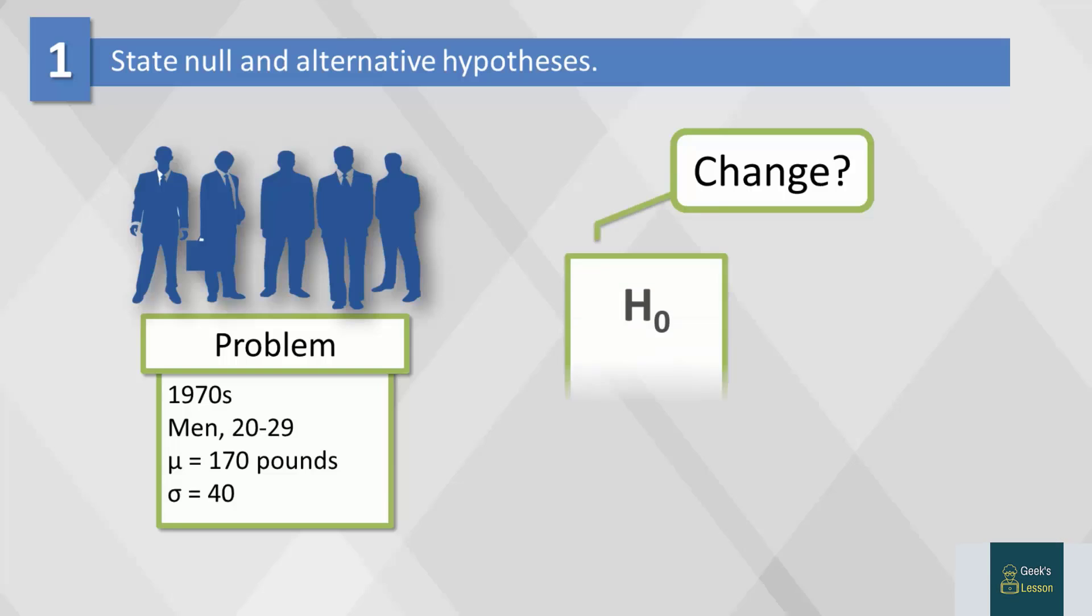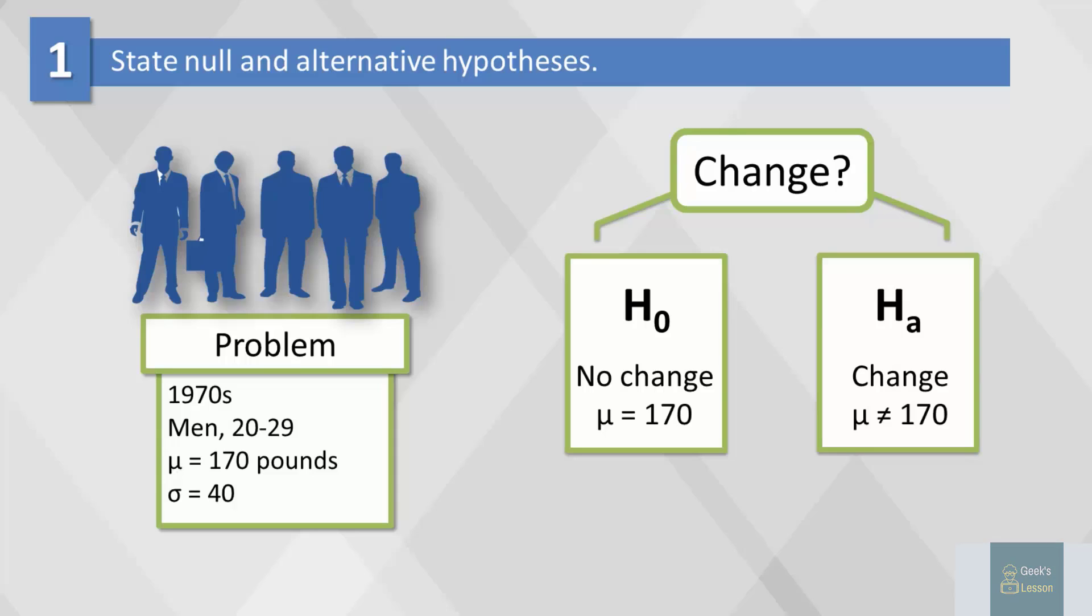Under the null hypothesis, there is no difference in the mean body weight between then and now, in which case mu would still equal 170 pounds. Under the alternative hypothesis, we assert that the mean weight has changed. Mu is not equal to 170 pounds.